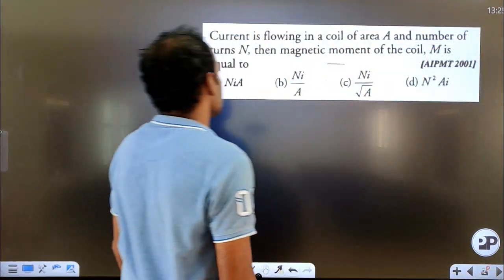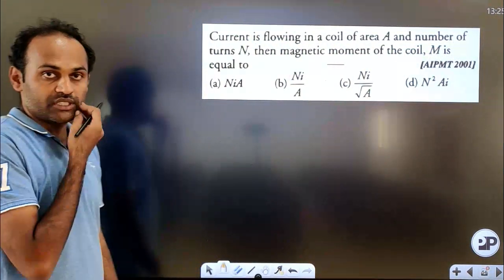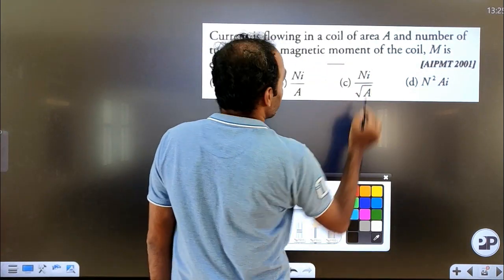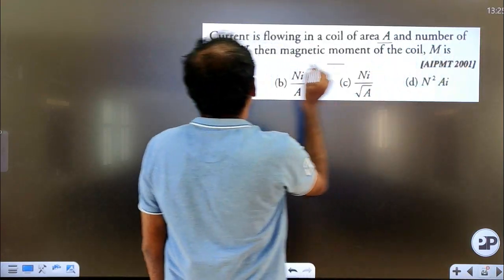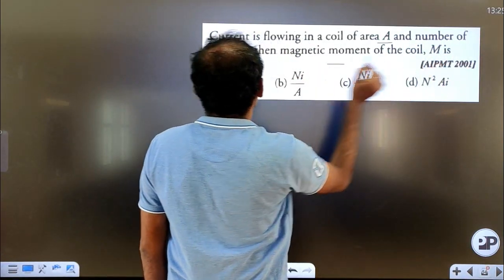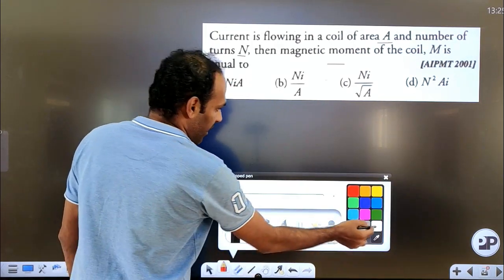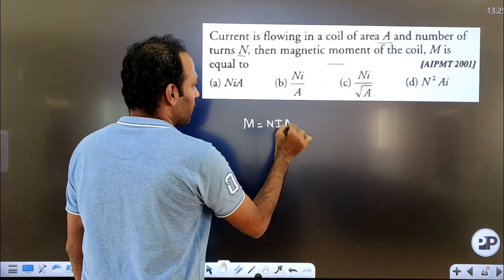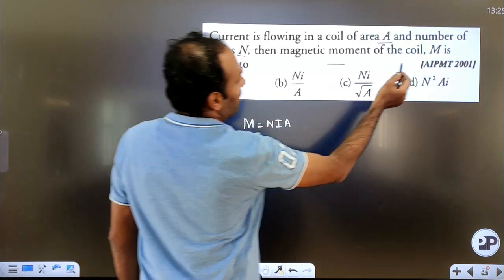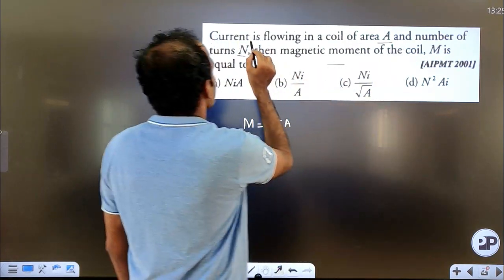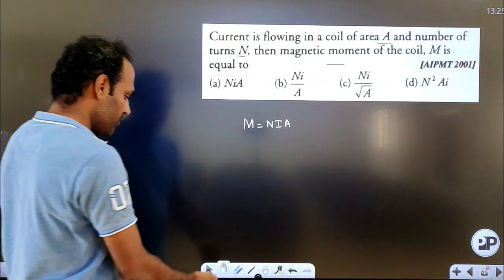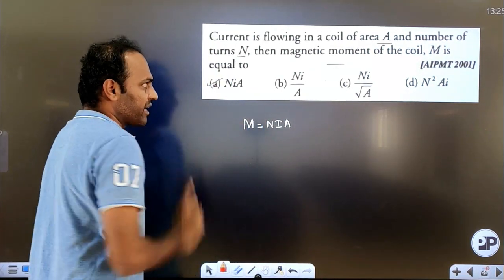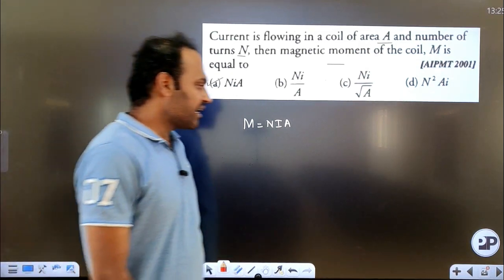Let us see some objectives related to these formulas. First MCQ: current is flowing in a coil of area A with number of turns N. Find the magnetic moment of the coil M. The answer is directly from the formula: M = N × I × A. So the correct option is option 1: N into I into A.